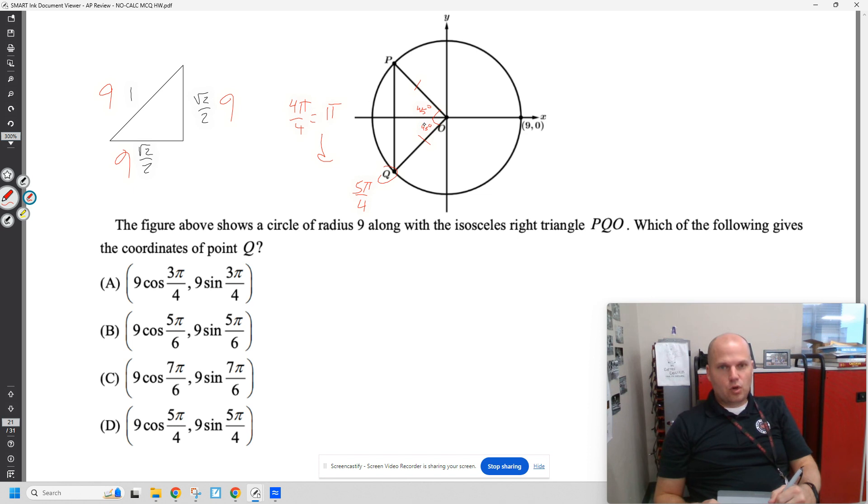The coordinates are going to be the x length comma the y length. The x length is going to be the cosine of your angle. If this was a unit circle, since this is a circle of radius nine we are going to scale it. And our y length will be that.